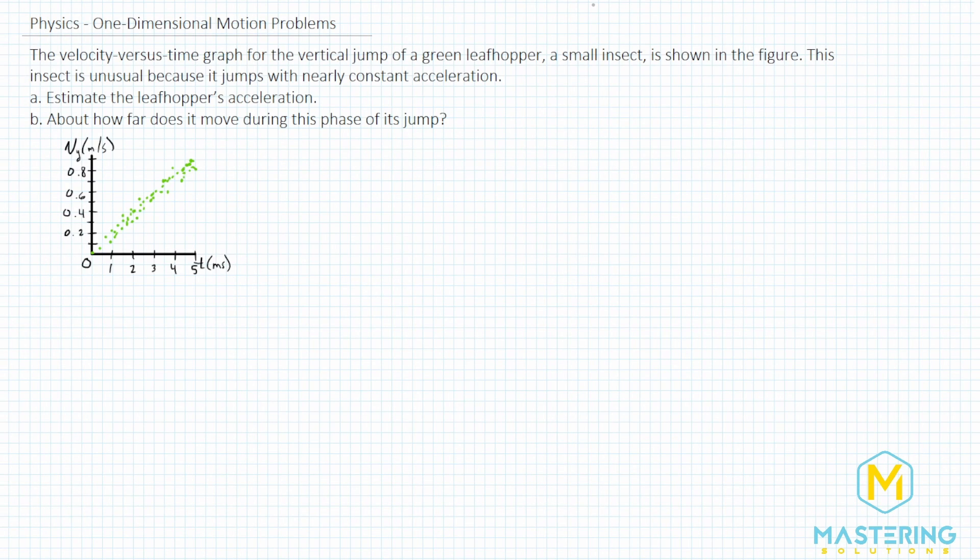Welcome to Mastering Solutions. The problem gives us a velocity versus time graph for this bug, they say a green leaf hopper, and they want us to figure out what the acceleration is and how far it jumps during the phase.